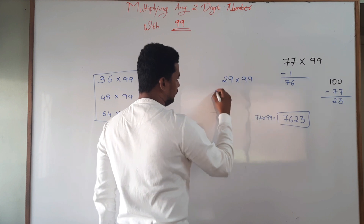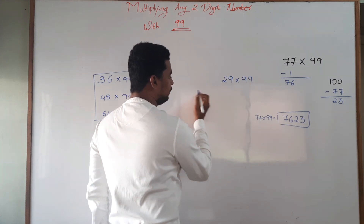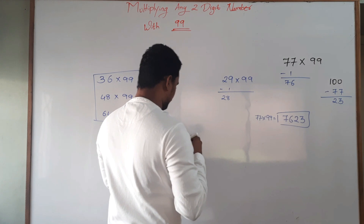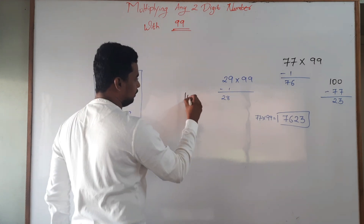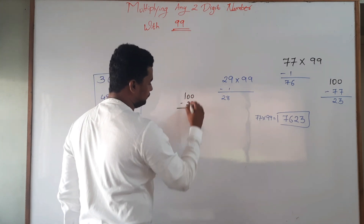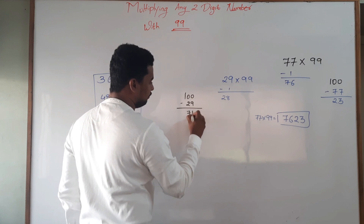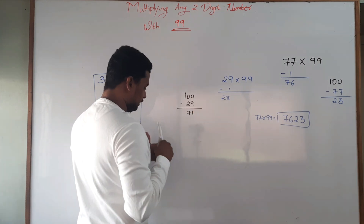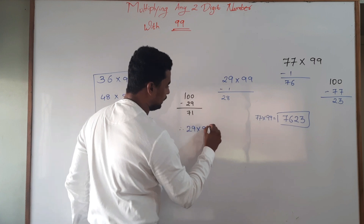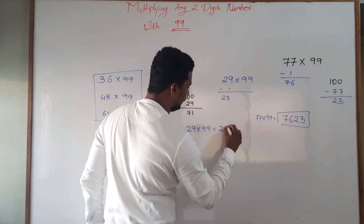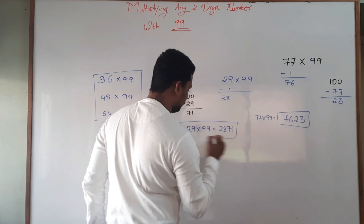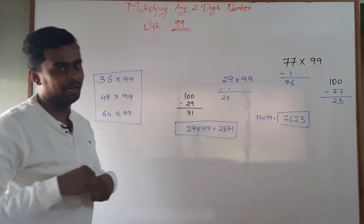For 29 multiplied by 99: 29 minus 1 will give me 28, and 100 minus 29 will give me 71. Therefore, 29 multiplied by 99 will give me 2871.